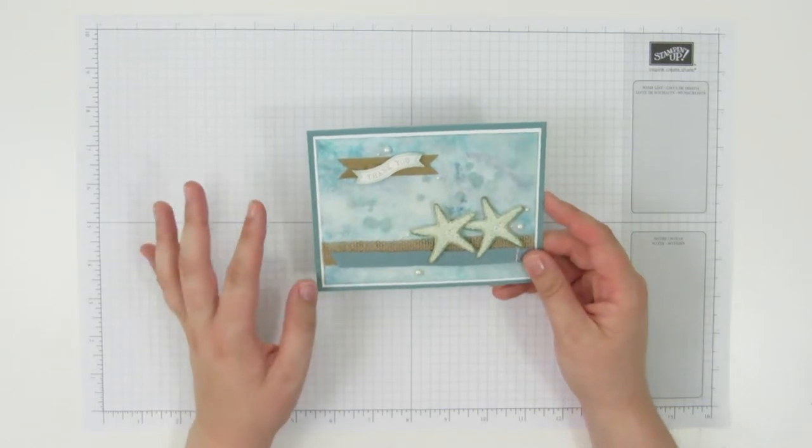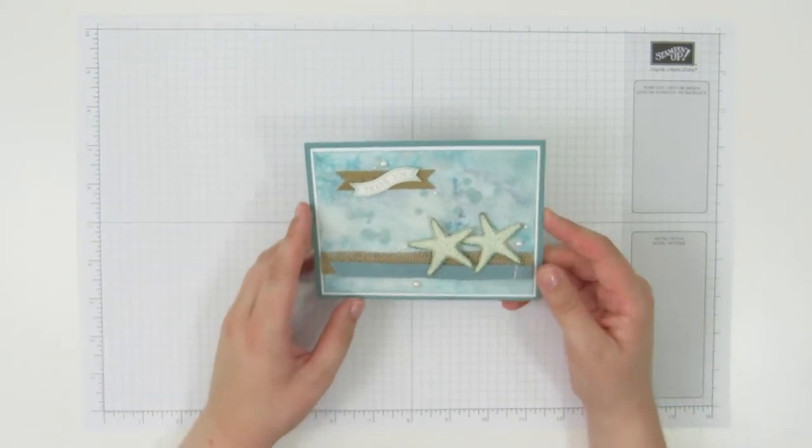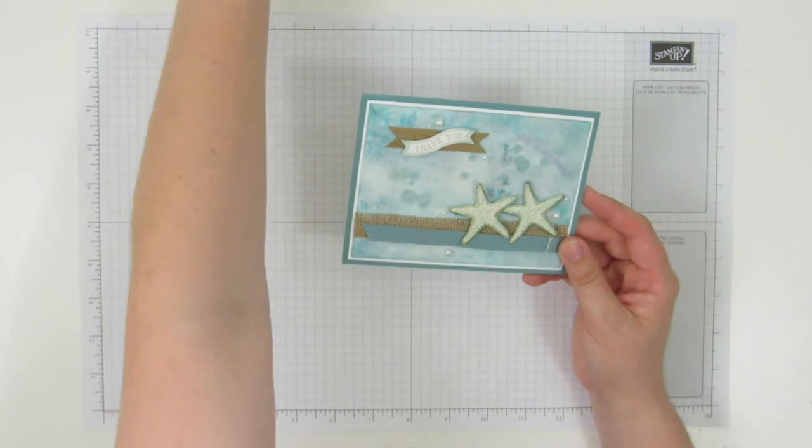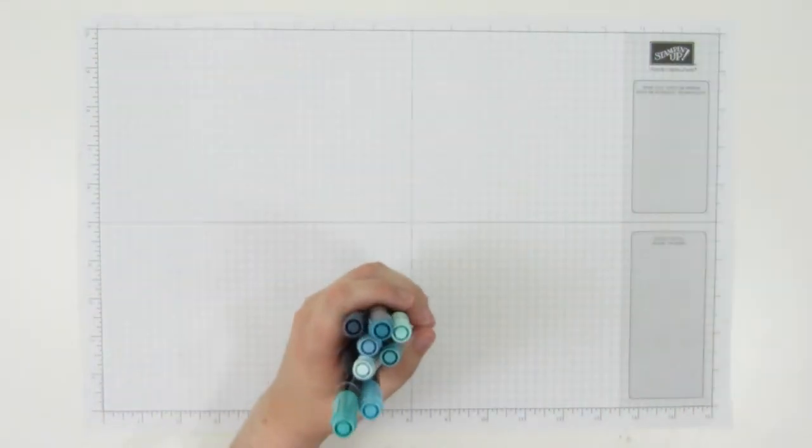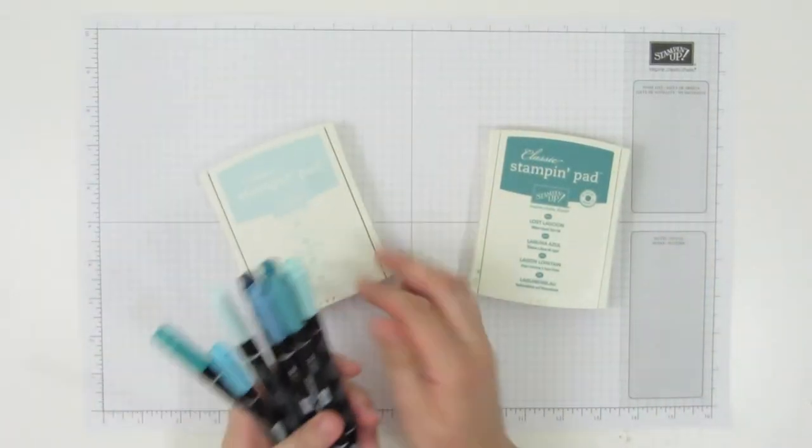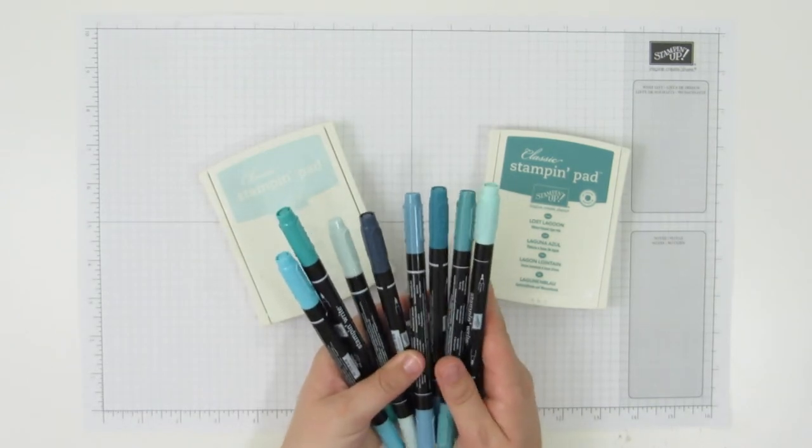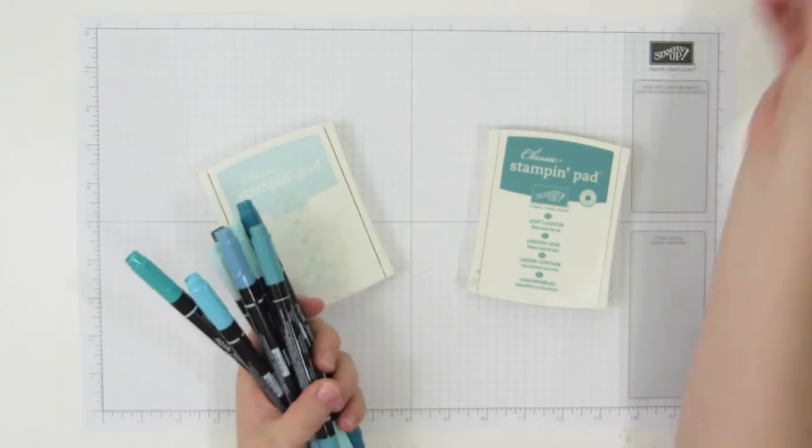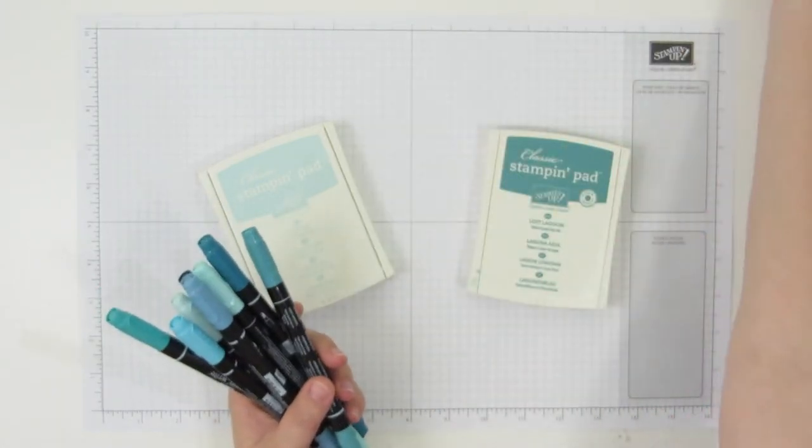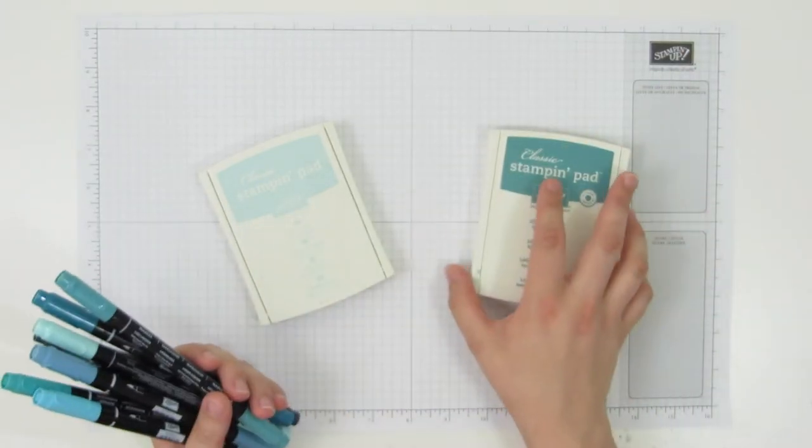I'm going to need a few different things, and it's going to depend on what colors you want. You're going to need some markers and some ink pads in the colors that you want to use. Obviously I'm using all kinds of shades of blue. I have done it as rainbows as well, but you can use any colors that you want.